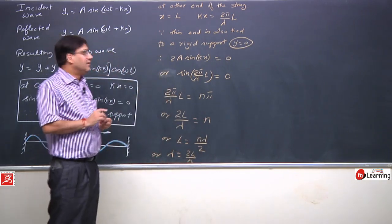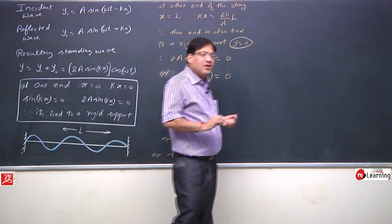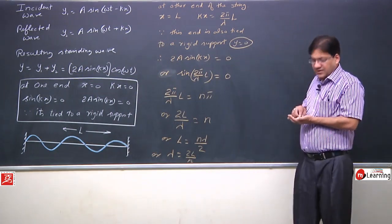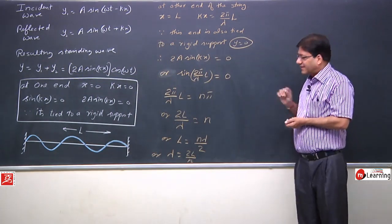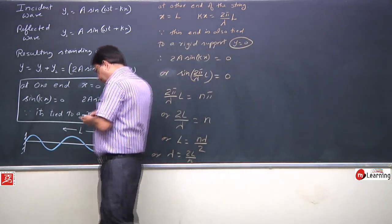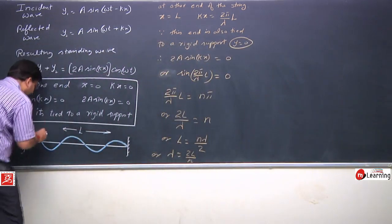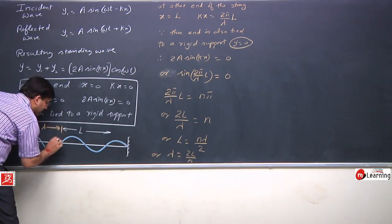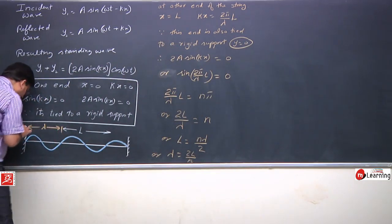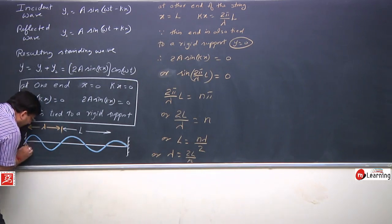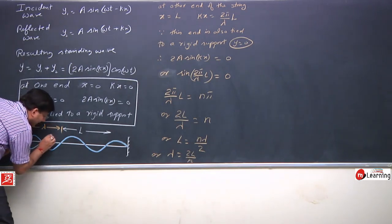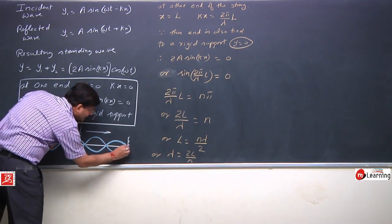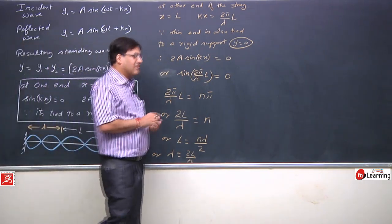The key point here is that the string cannot vibrate with just any random wavelength. The wavelength is not a random value — when the string vibrates, the wavelength has a fixed, quantized value given by λ = 2L/N.